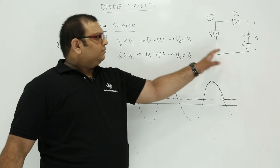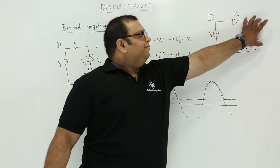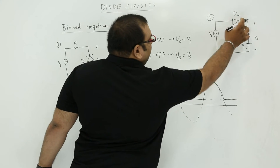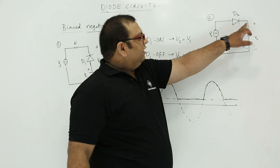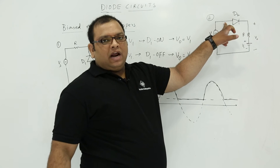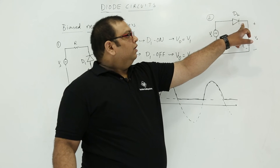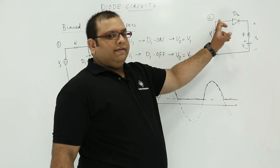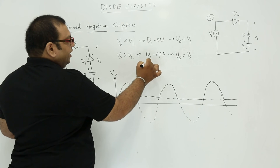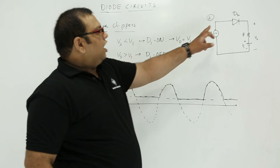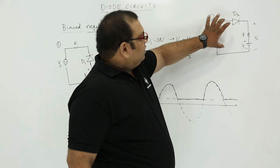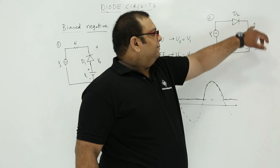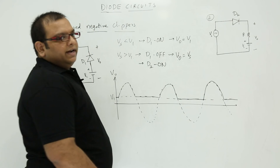Now let us see the other version of the circuit. In this version, we have a diode and the output is taken across the resistance and the voltage source. If you observe the circuit carefully, we will see the conditions when the diode is conducting and when the diode is off. If you want to see when the diode is conducting: this voltage is V1 at this point. If you are having Vs more than V1, then only the diode will conduct. When Vs is more than V1, D2 will be in on condition, and whatever voltage you get will appear across V0. So output voltage is equal to Vs.